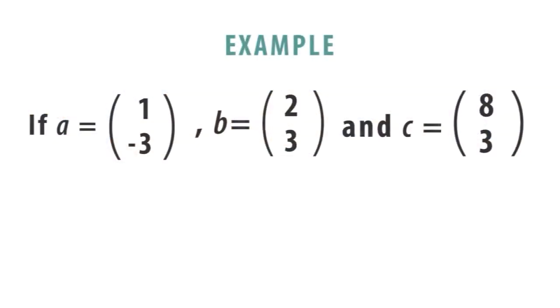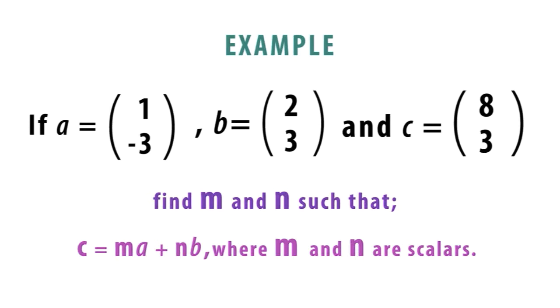Let's go to the next question. And this question will go to Alice. If the vector A is equal to (1, -3), and the vector B is equal to (2, 3), also vector C is given as (8, 3). We want to find M and N such that vector C is equal to M vector A plus N vector B, where M and N are scalars. Alice, please, let's go with the solution.